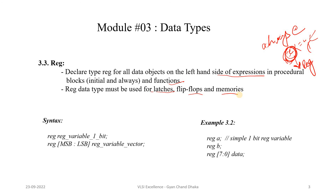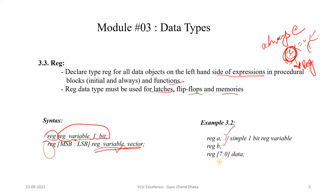The syntax for the register data type uses the reg keyword. A 1-bit register is simply reg followed by the variable name, and we can also declare a vector register. For example: reg A, reg B, and a vector data of type reg.